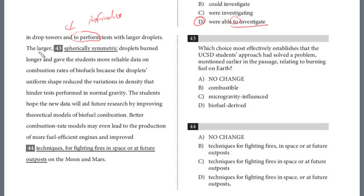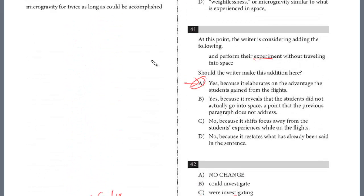43. The larger spherically symmetric droplets burned longer and gave the students more reliable data on combustion rates of biofuels because the droplets uniform shape reduced the variations in density that hinder tests performed in normal gravity. So 43, we want to effectively establish that the UCSD students approach had solved a problem mentioned earlier relating to burning. And again, this is sort of evidence-based. The droplets, let's look for evidence earlier describing the droplets.